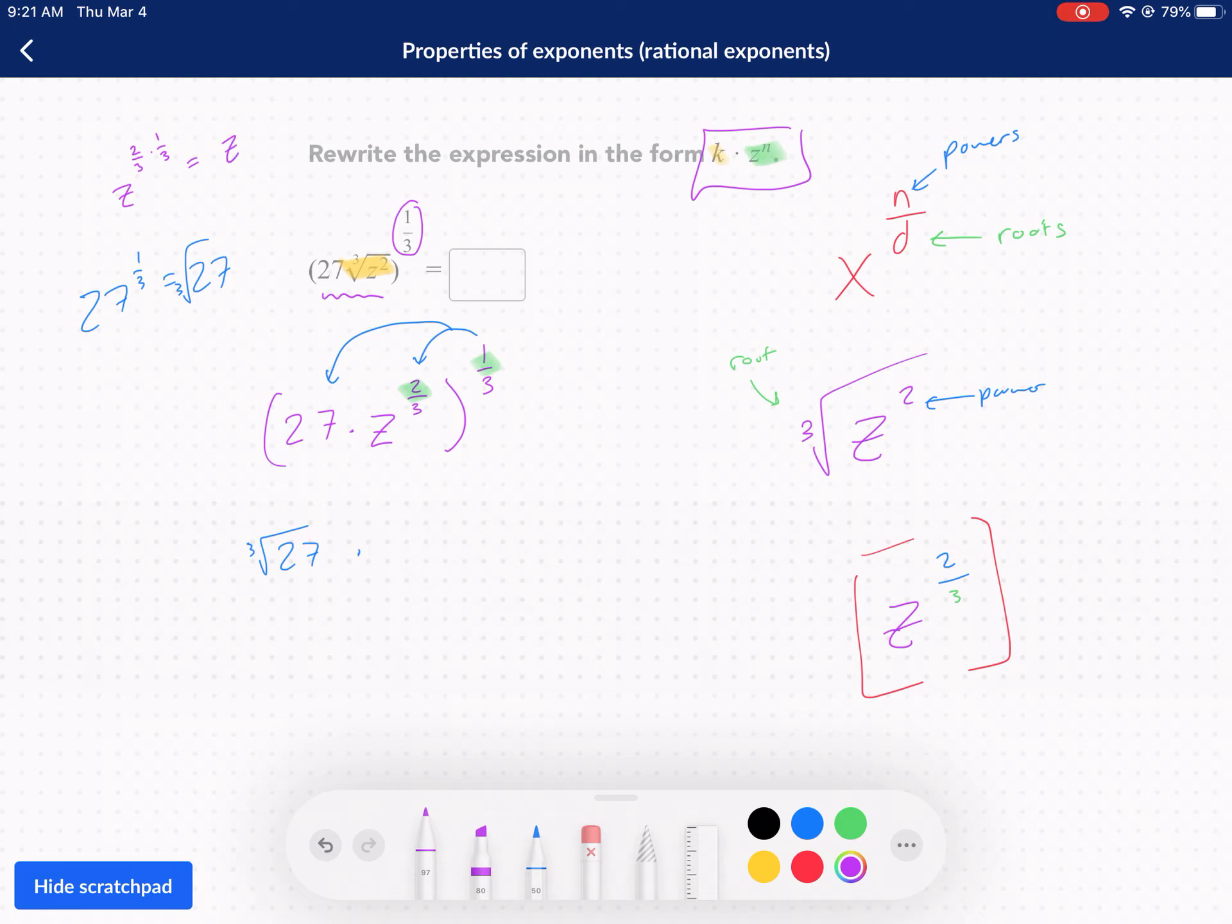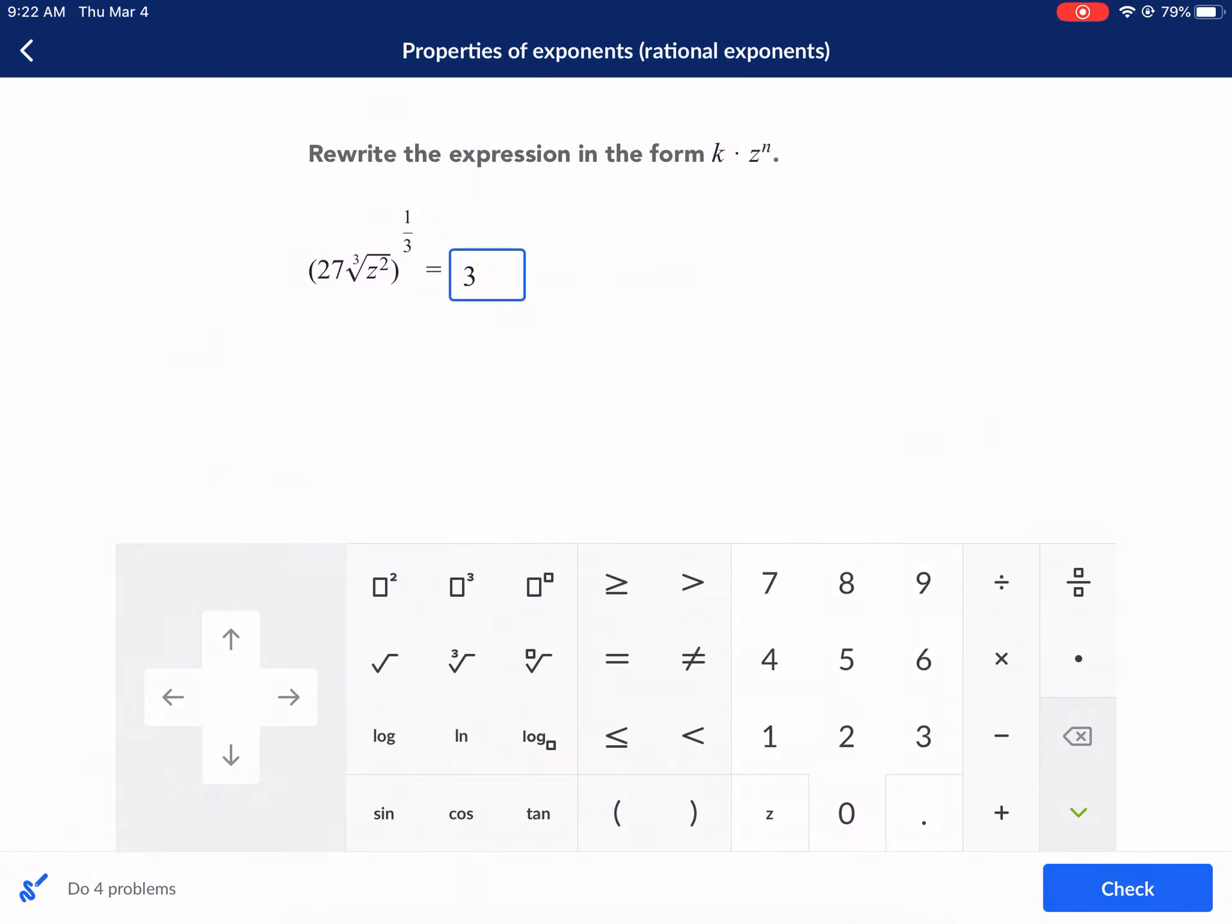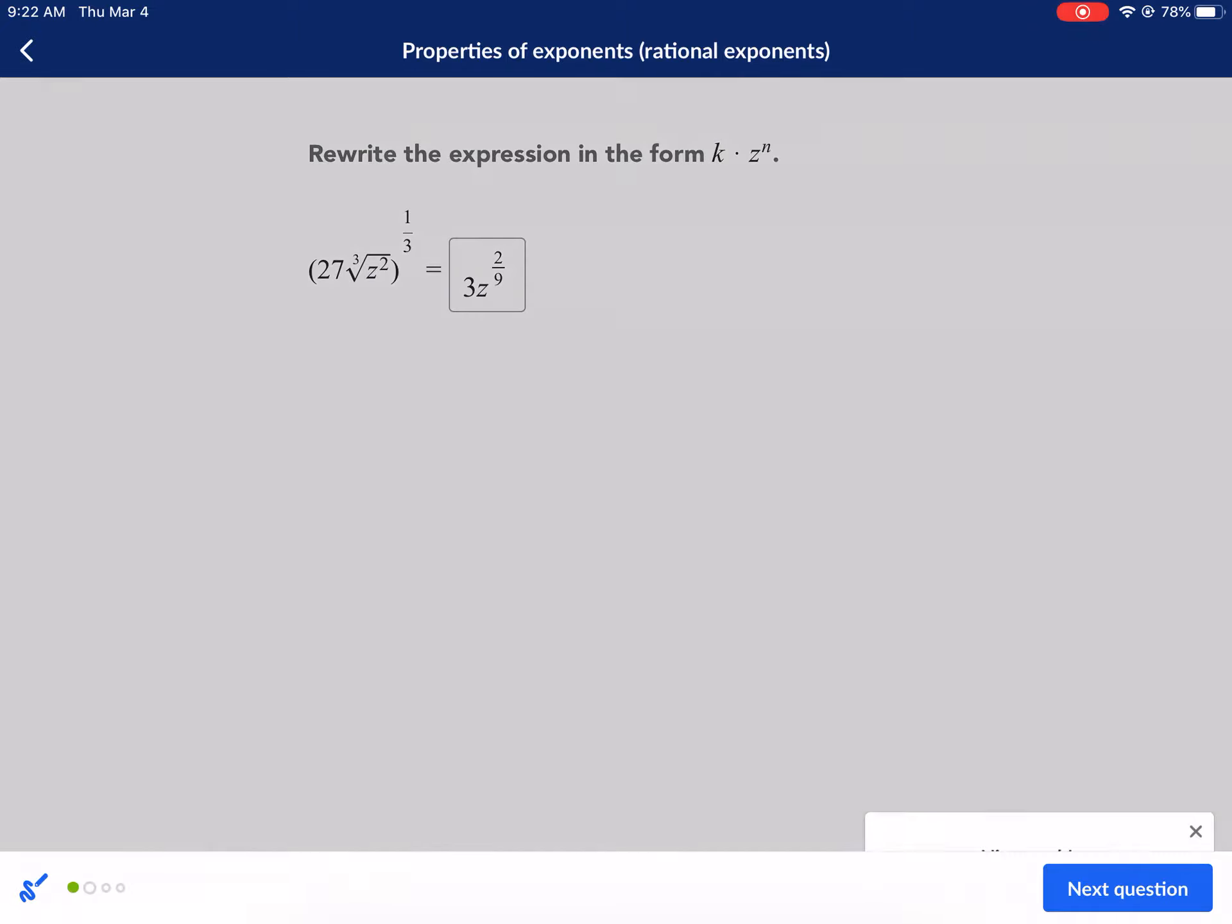That gives us z, multiply the top times top, you get two over nine. So z to the two-ninths power. Now we just need to simplify from here. That fraction can't be reduced. Cube root of 27 is three. So it's three times z to the two-ninths power, and that's our final answer. Three times z to the two over nine power. Check it. Got it.